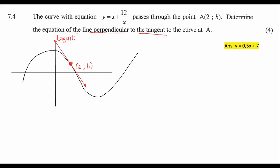They want the equation of the line that is perpendicular to the tangent, so it must be perpendicular — going like that. We know that these are at 90 degrees. Our goal for this question is to find the equation of this green line, which is y equals mx plus c.